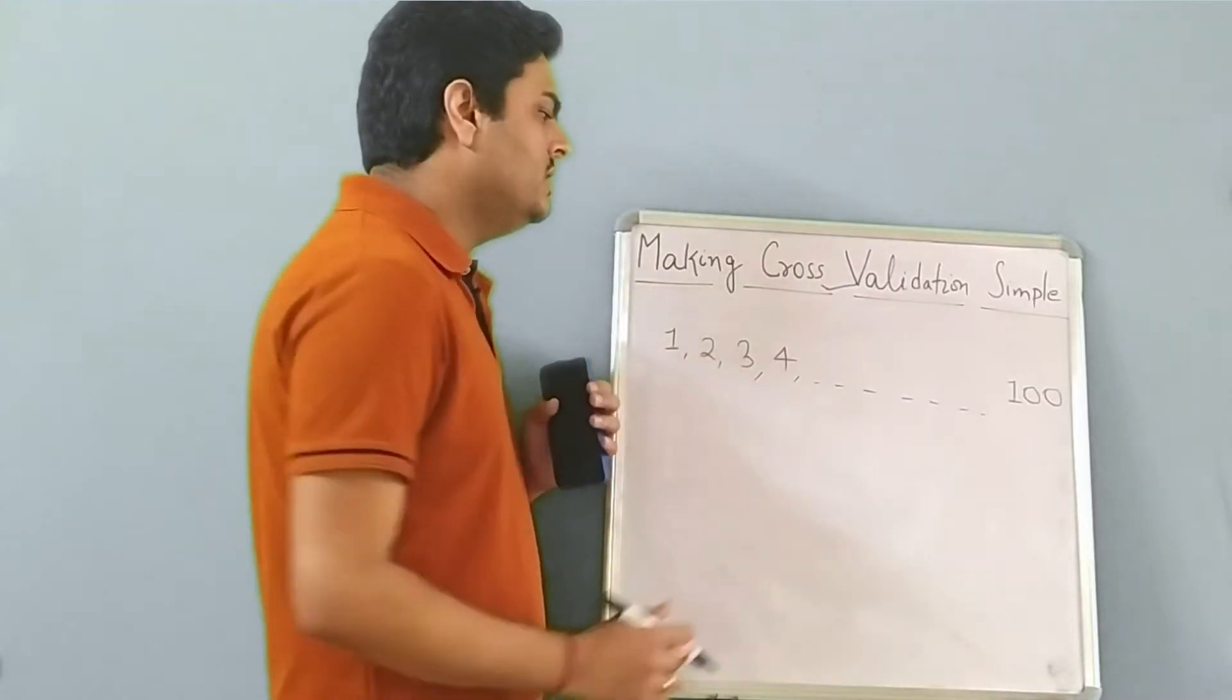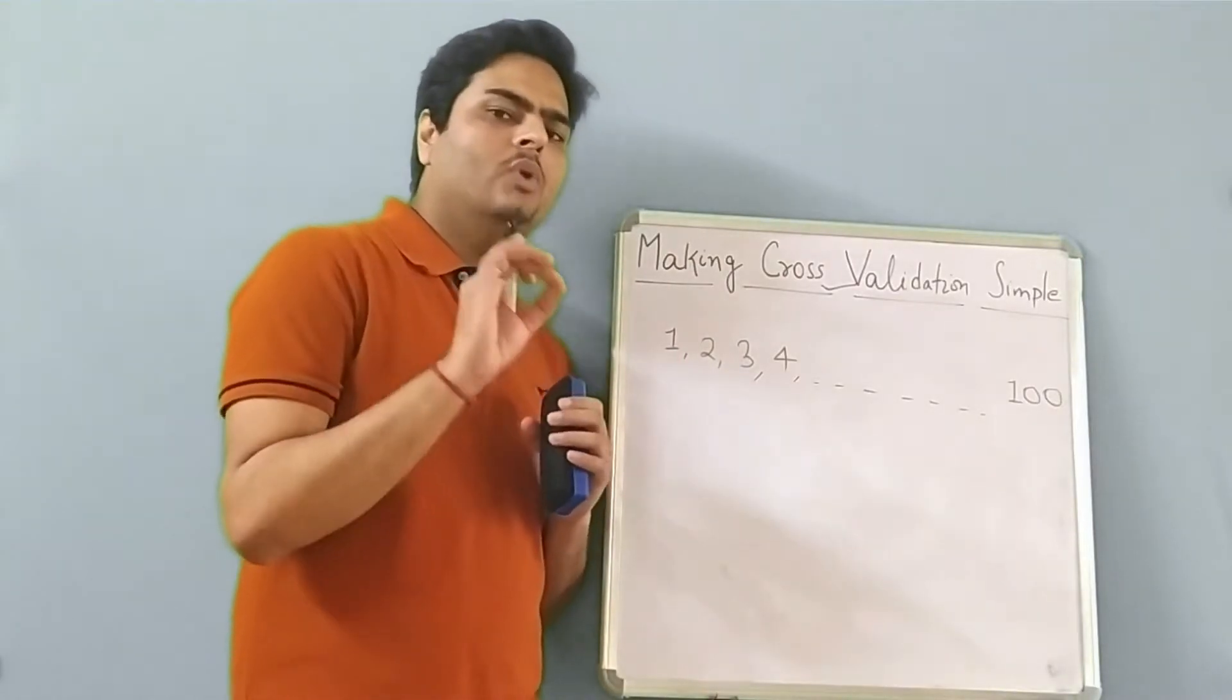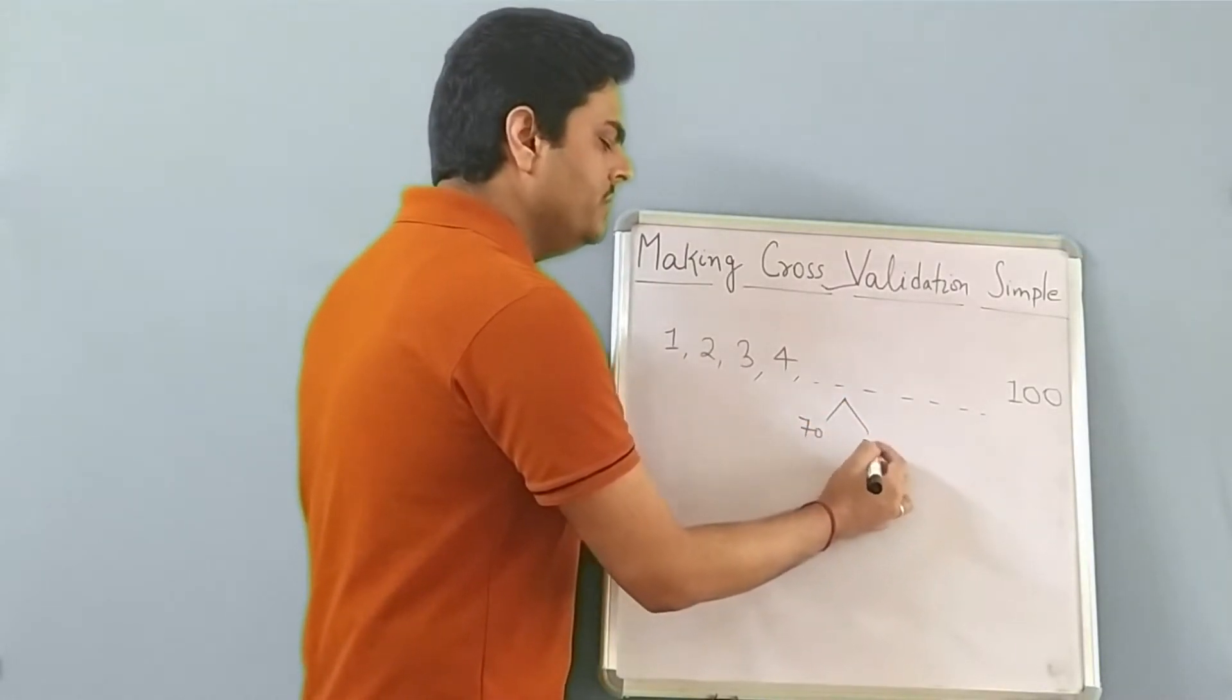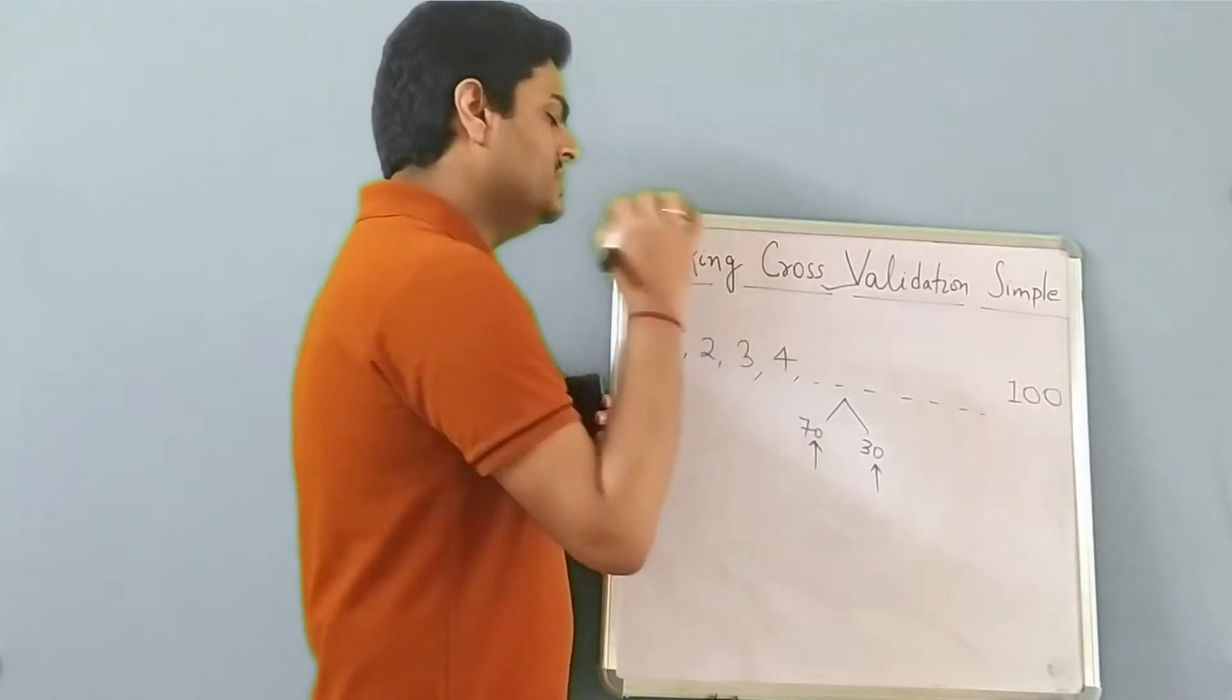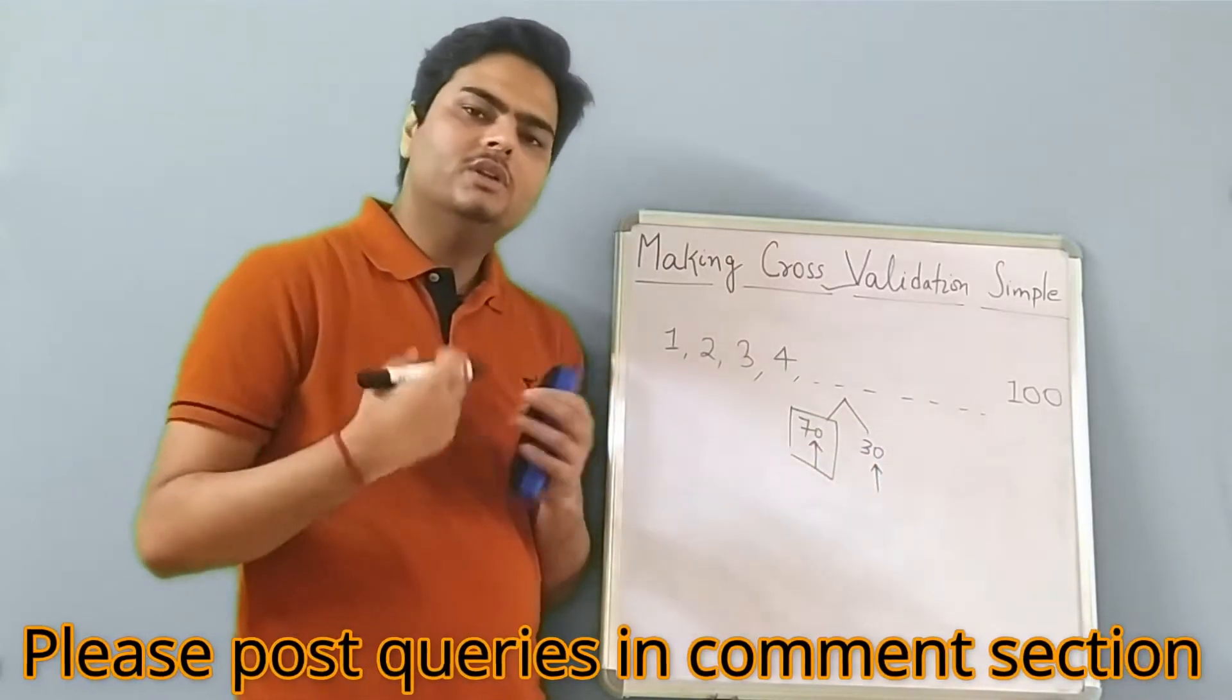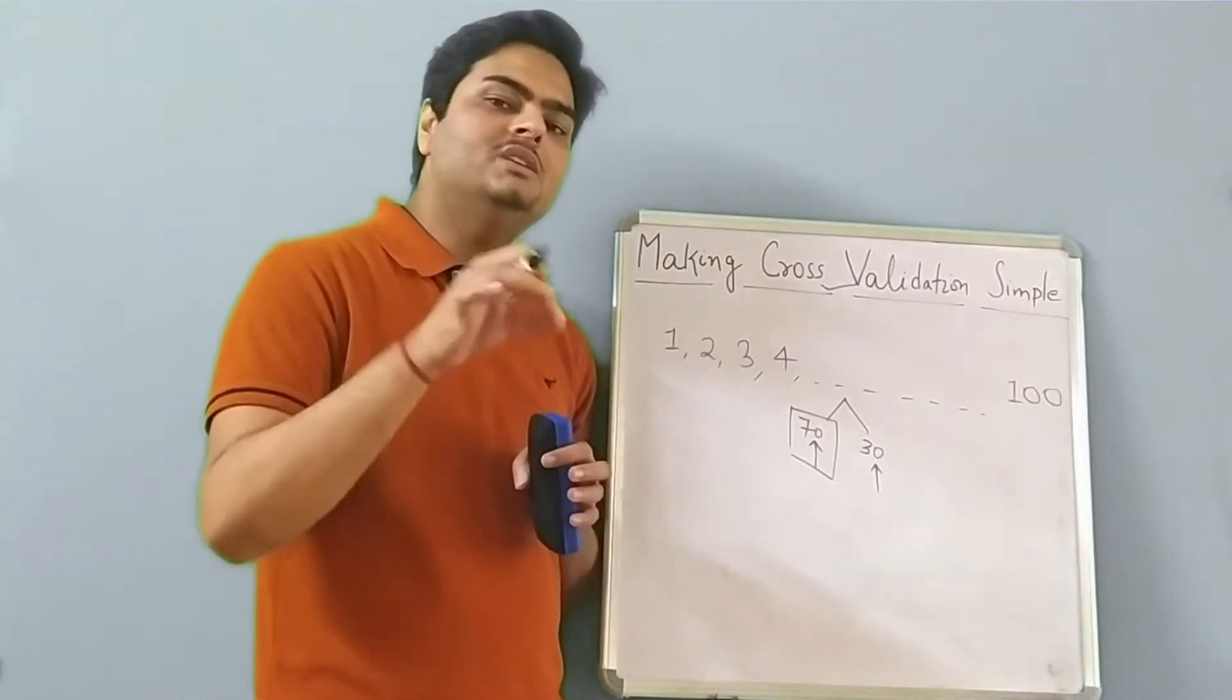Let's say in your data, there are 100 records. So you must be aware by now that what you typically do, you break this data into a ratio of 70-30 or 80-20. You train your model on this 70% and you test your model on this 30%. Why you do that? You have to do that because you have already trained your model here. But you want an assurance that your model is good.